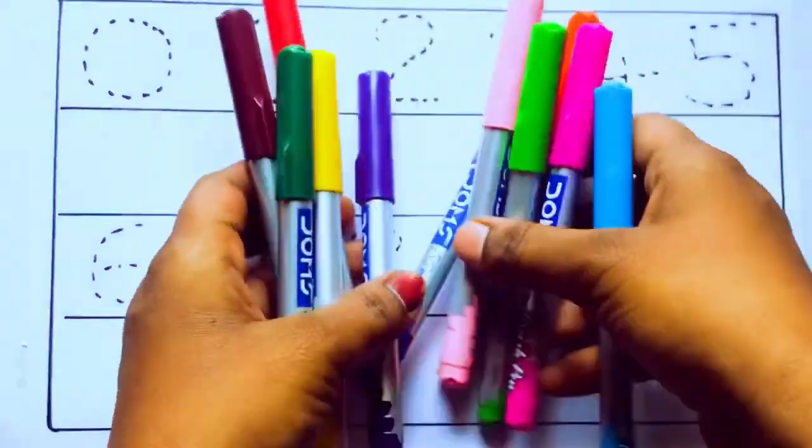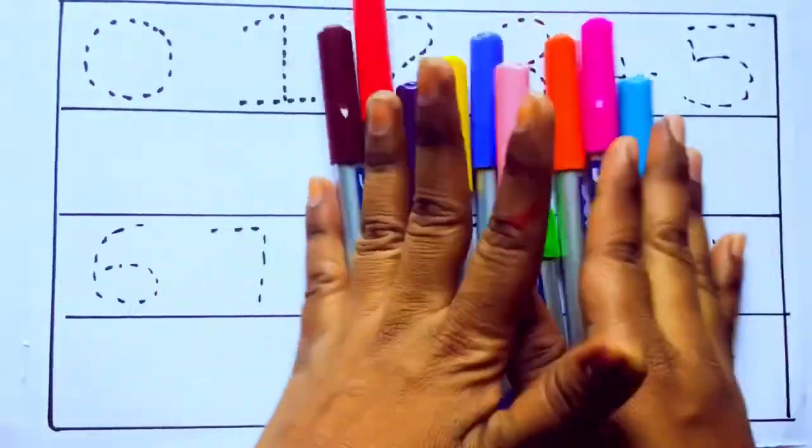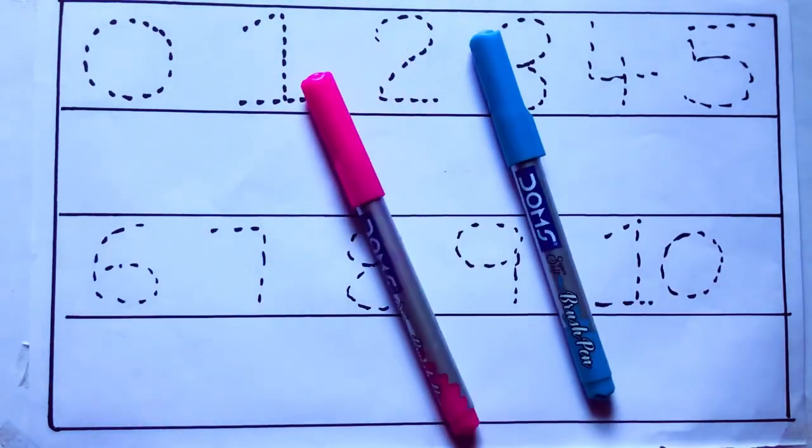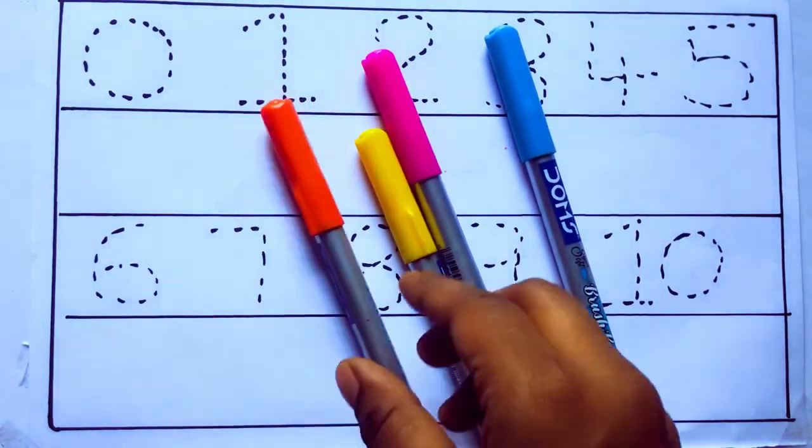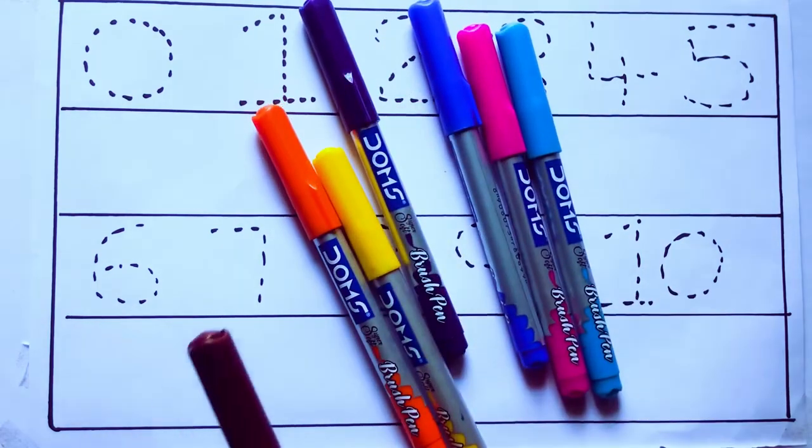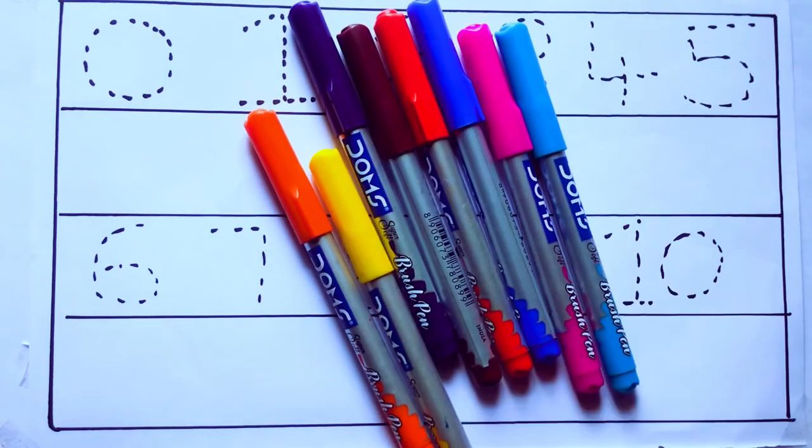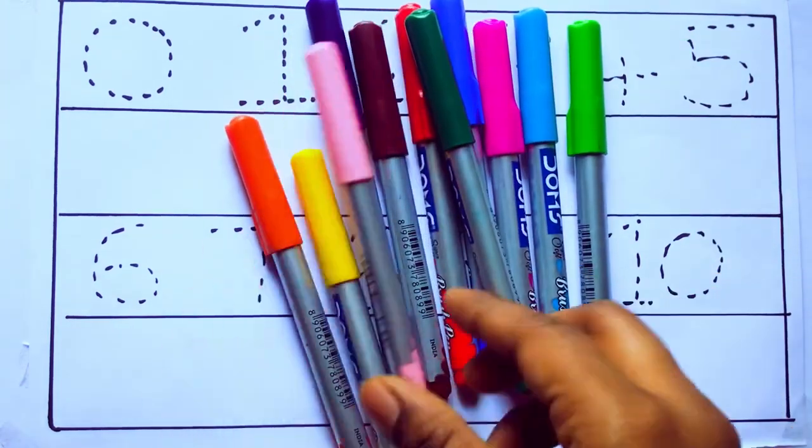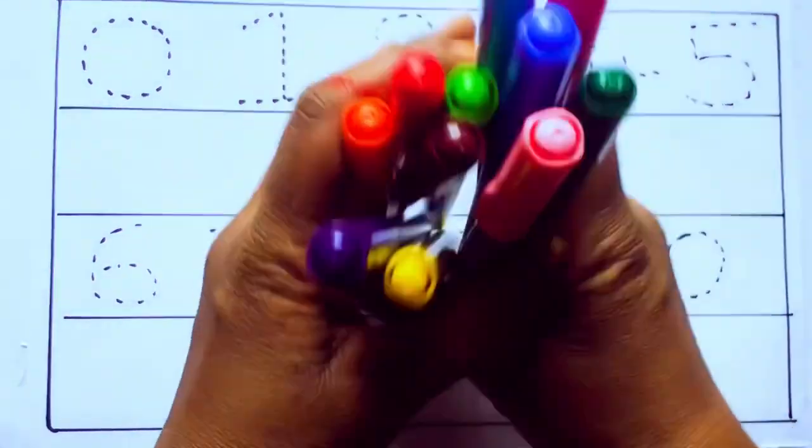Let's learn some colors. These are all the color pencils. Let's learn the names: sky blue color, pink color, yellow color, orange color, violet color, blue color, brown color, red color, green color, and pink color.